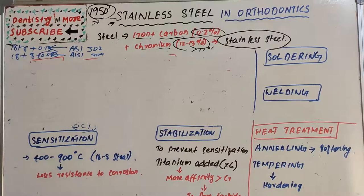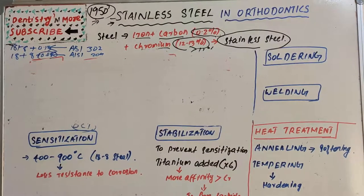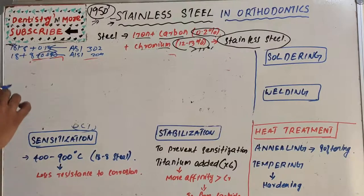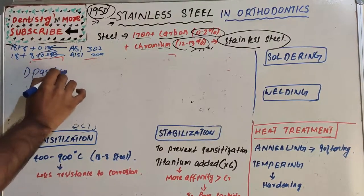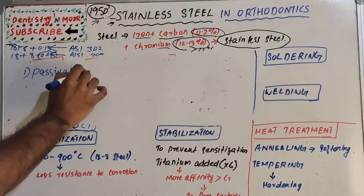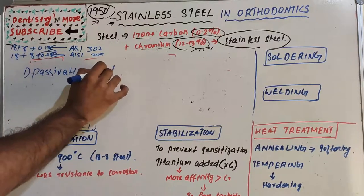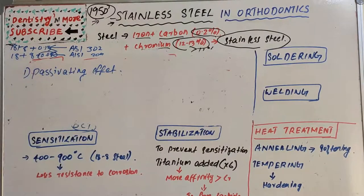Next, we need to learn about some crucial properties of stainless steel. The first important property is the passivating effect. The passivating effect is the ability of stainless steel to prevent the steel from tarnish and corrosion.